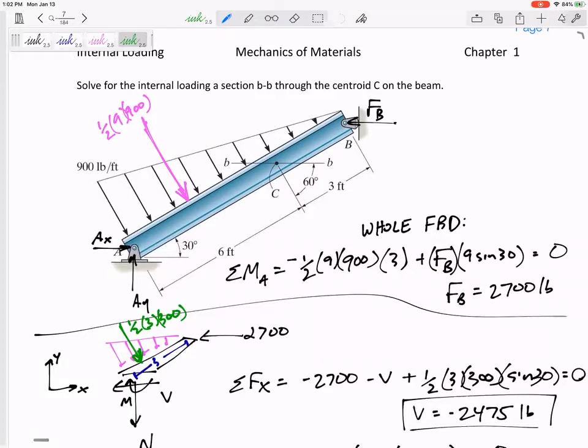And I only needed one equation, that's sum of the moments about A. So I summed the moments about A, have to be able to handle the distributed loads, have to be able to handle these angles – should this be cosine 30 or sine 30? And I solved for FB.